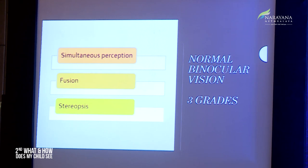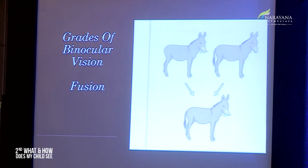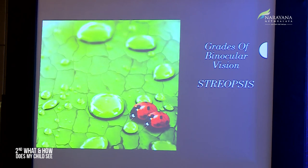The various grades of binocular vision are: simultaneous perception, fusion, and the highest grade — stereopsis. Simultaneous perception is the ability to fuse two dissimilar images as one single image, like perceiving a cage and a bird together. The next grade, fusion, involves fusing slightly dissimilar images into one. Stereopsis — the highest grade — enables you to perceive depth, width, and texture of things you look at, and requires perfect sensory and motor fusion.